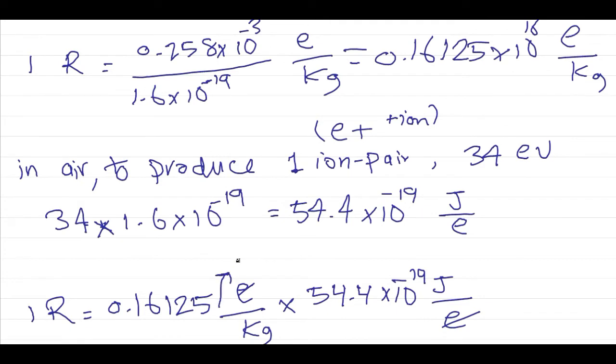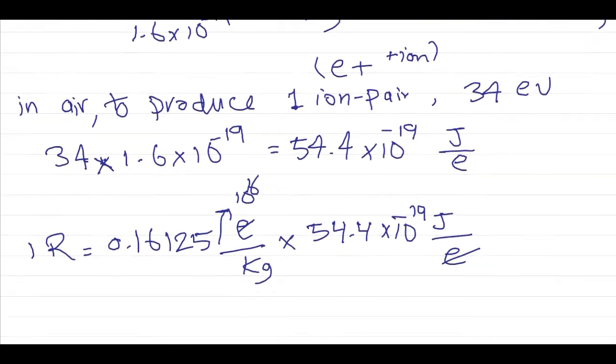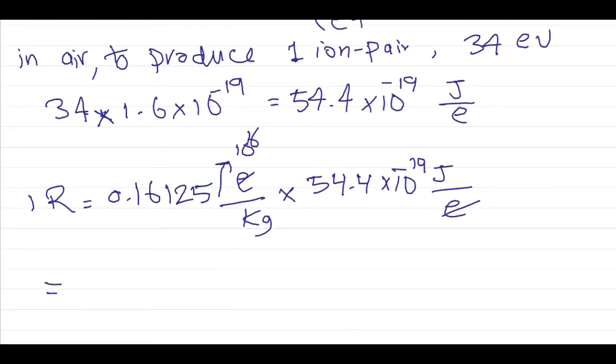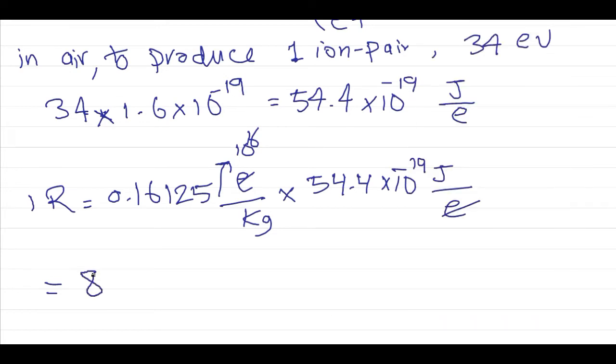Multiplying these values, 1.6125 times 54.4 equals 87.72, giving us 8.772 times 10 to the minus 3 joules per kilogram.